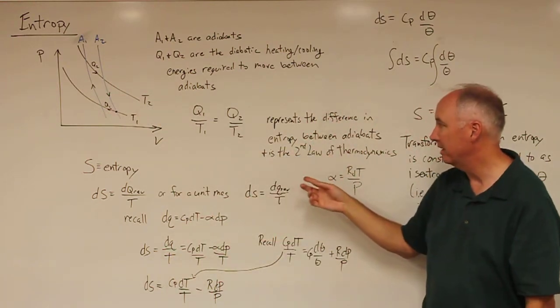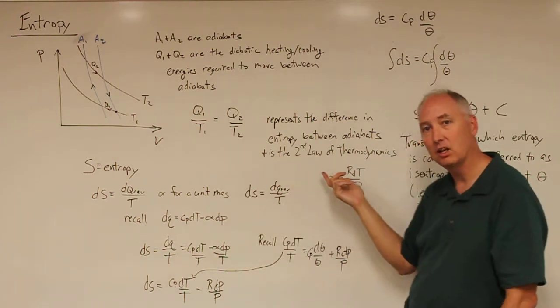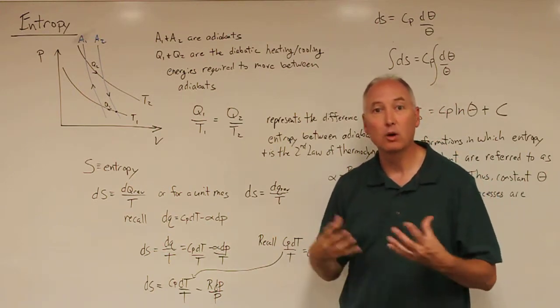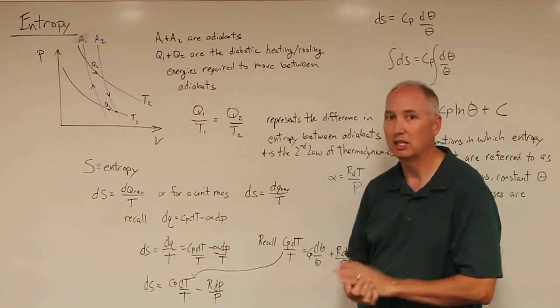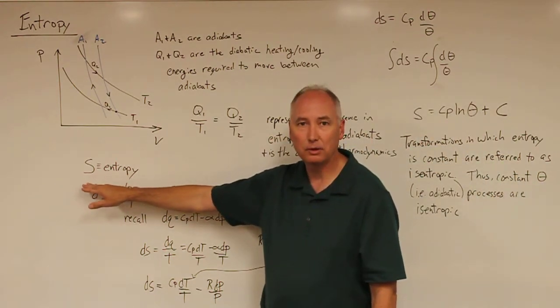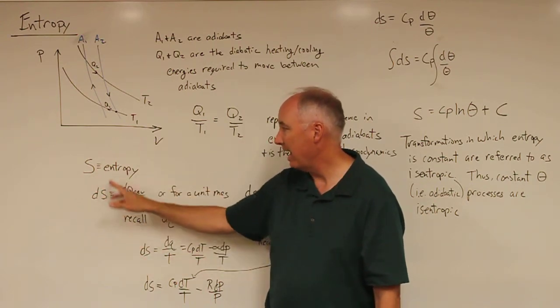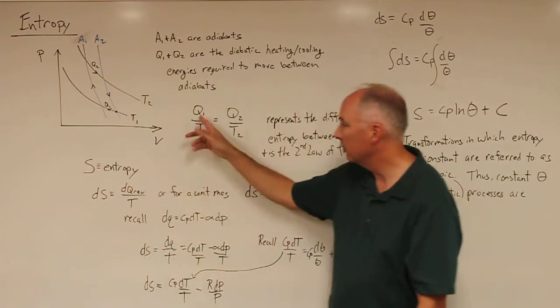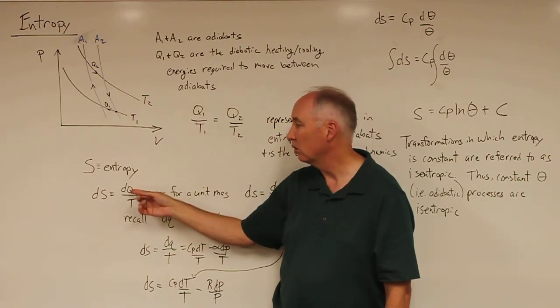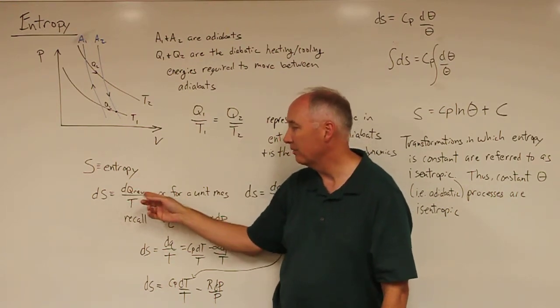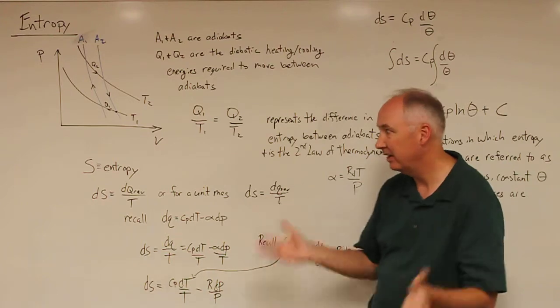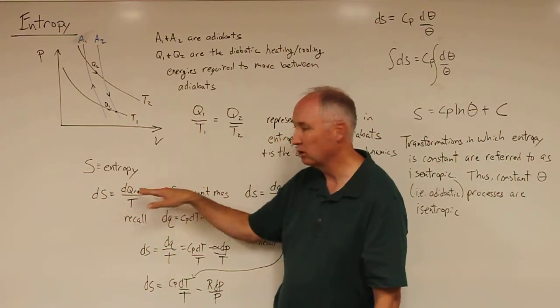This is the mathematical formulation of the second law of thermodynamics, which has to do with the maximum amount of work that can be done by extraction of heat from a system. We're going to use the variable capital S as entropy, and the differential of that is related to the change in diabatic heating, dQ reversible, divided by temperature. This is the maximum amount of heating that can occur in this system in a reversible process.